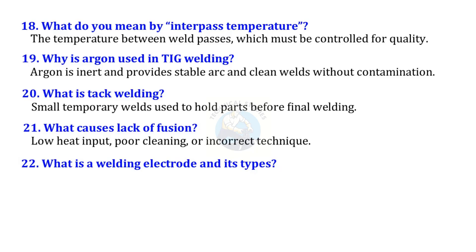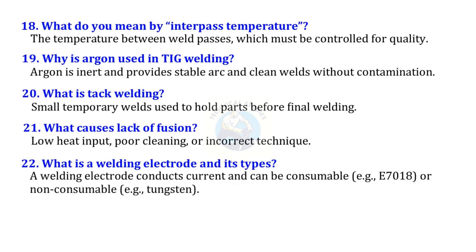What is a welding electrode and its types? A welding electrode conducts current and can be consumable, e.g. E7018, or non-consumable, e.g. tungsten.